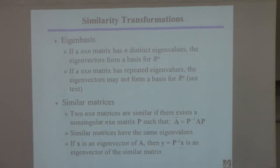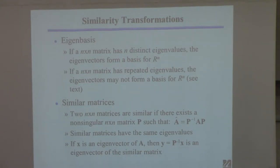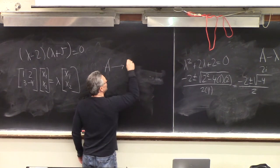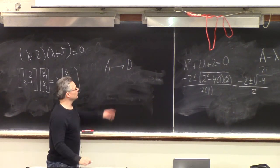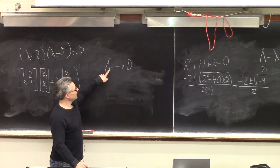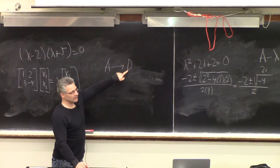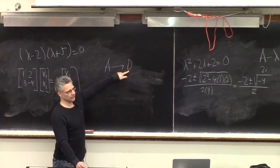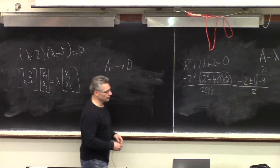Now we want to talk about diagonalization of a matrix. The goal — which will become clear when we solve differential equations — is to take a matrix A and convert it into a diagonal matrix, where everything is zero except along the diagonal. That's called diagonalization.